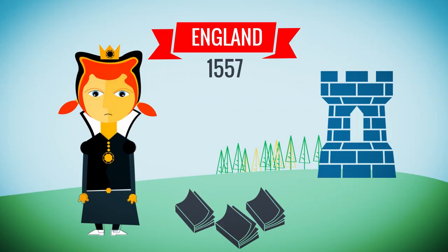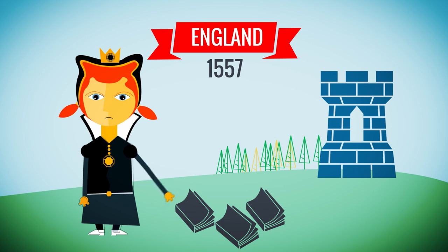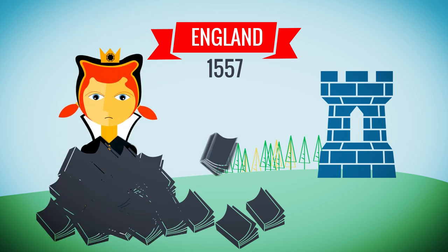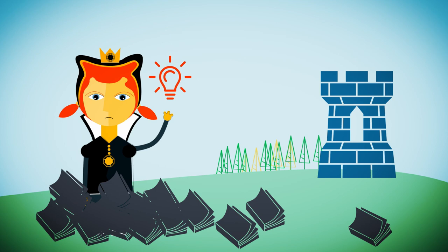Meanwhile, in England, in 1557, Queen Mary I found herself unable to cope with a number of critical works that were being printed. So, she came up with a different approach. Rather than trying to censor everything, she started a select-exclusive club.